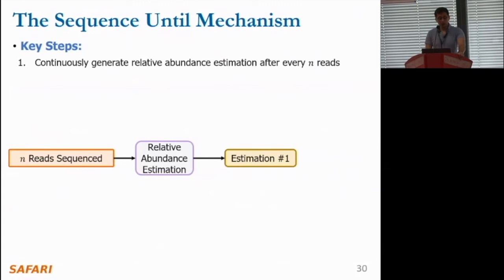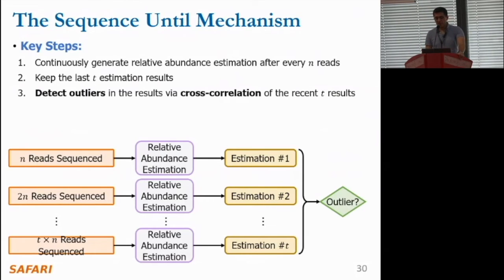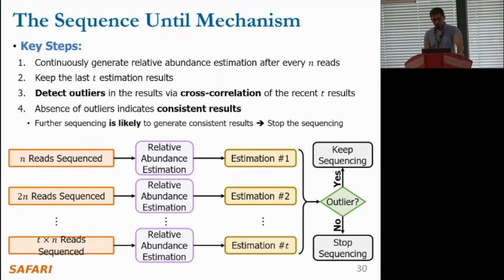To provide a practical example, let's consider the relative amounts estimation use case. The Sequence-Until mechanism works in several steps: we continuously generate relative amounts estimation after every sequencing of every N reads and always retain the most recent T estimation results. The next step involves detecting outliers in these results by performing a cross-correlation between them. If we find no outliers, it indicates that recent sequencing of reads could not significantly change the estimation results. In such a scenario, no new significant information is likely to be gained from further sequencing, so we can stop the entire sequencing run. If there is an outlier, we simply keep sequencing.